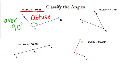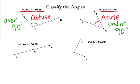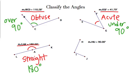Our next angle is EGF, which measures 41.79 degrees. So that is what we call acute — acute is anything under 90 degrees. Our next one is 180 degrees. You may notice this looks a lot like a segment. It is — it's called a straight angle, like a straight line. A straight angle has to measure exactly 180 degrees.